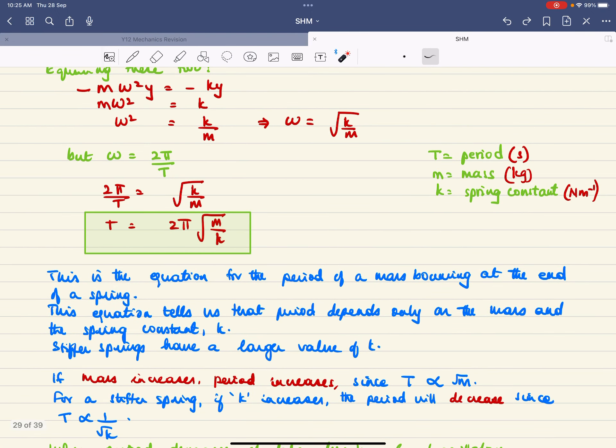This is the equation for the period of a mass bouncing at the end of a spring. This equation tells us that period depends only on the mass and the spring constant k. Stiffer springs have a larger value of k.